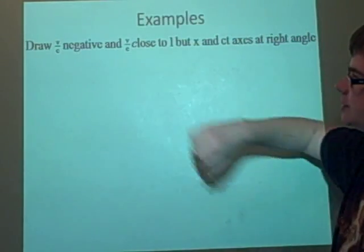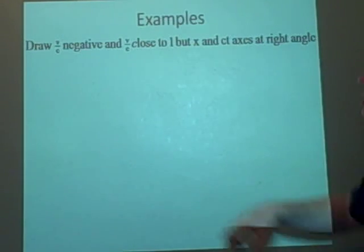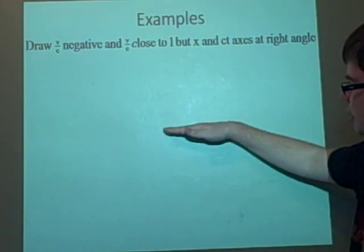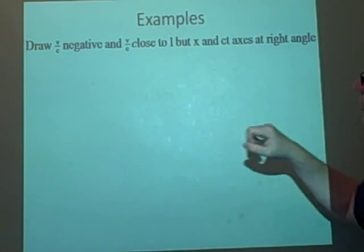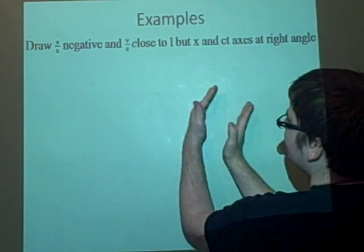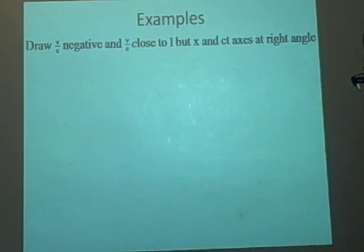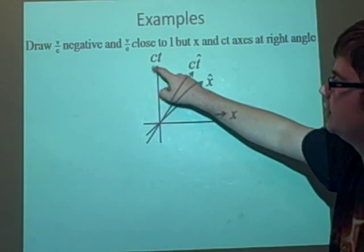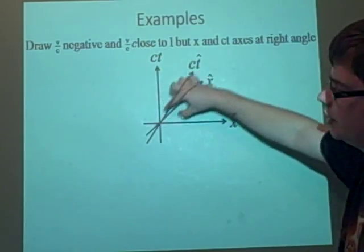For the next example, v/c is negative, which means F-hat is going to be inside the F axis, and it's also close to 1. With x and ct at right angles, the F-hat axes will be inside and close to making a line approaching the x = ct light-cone line. They're trying to be as far away from the F axes as they can, but still remain inside.